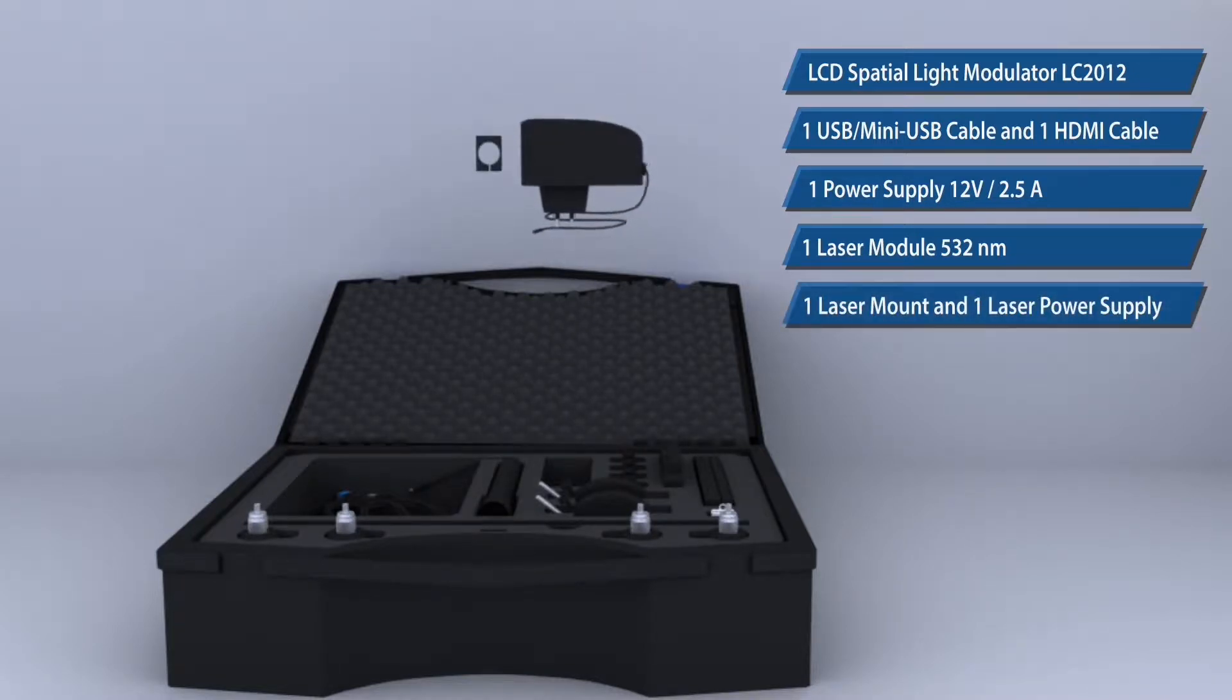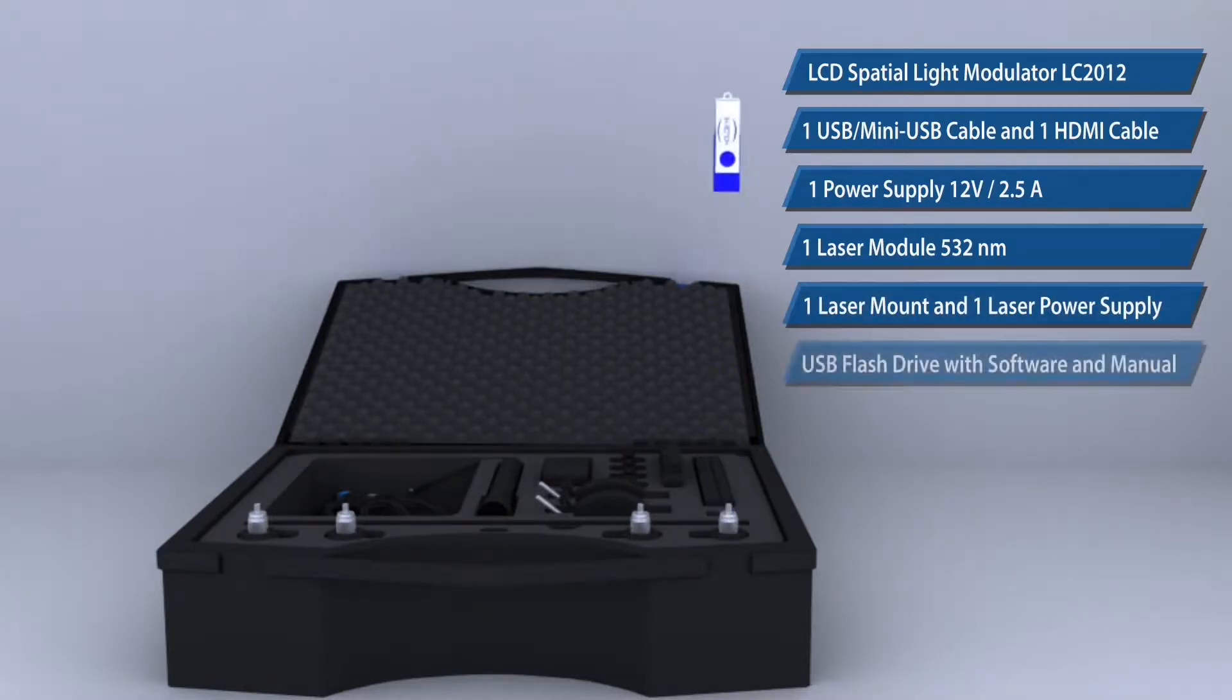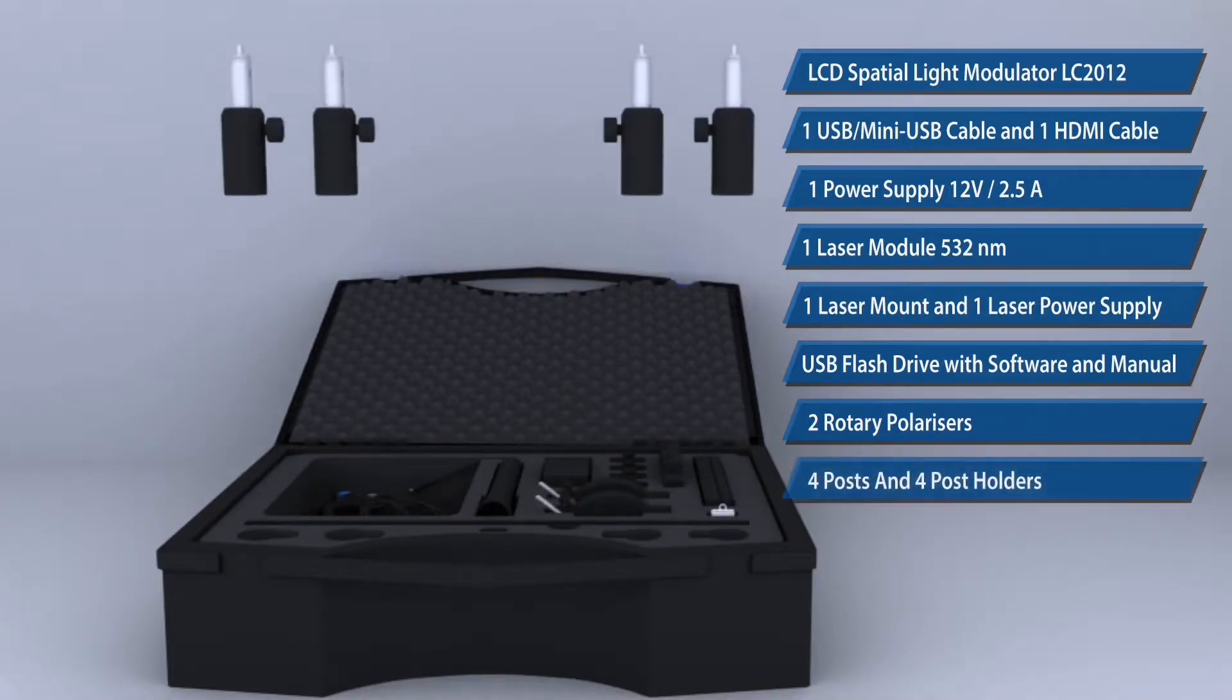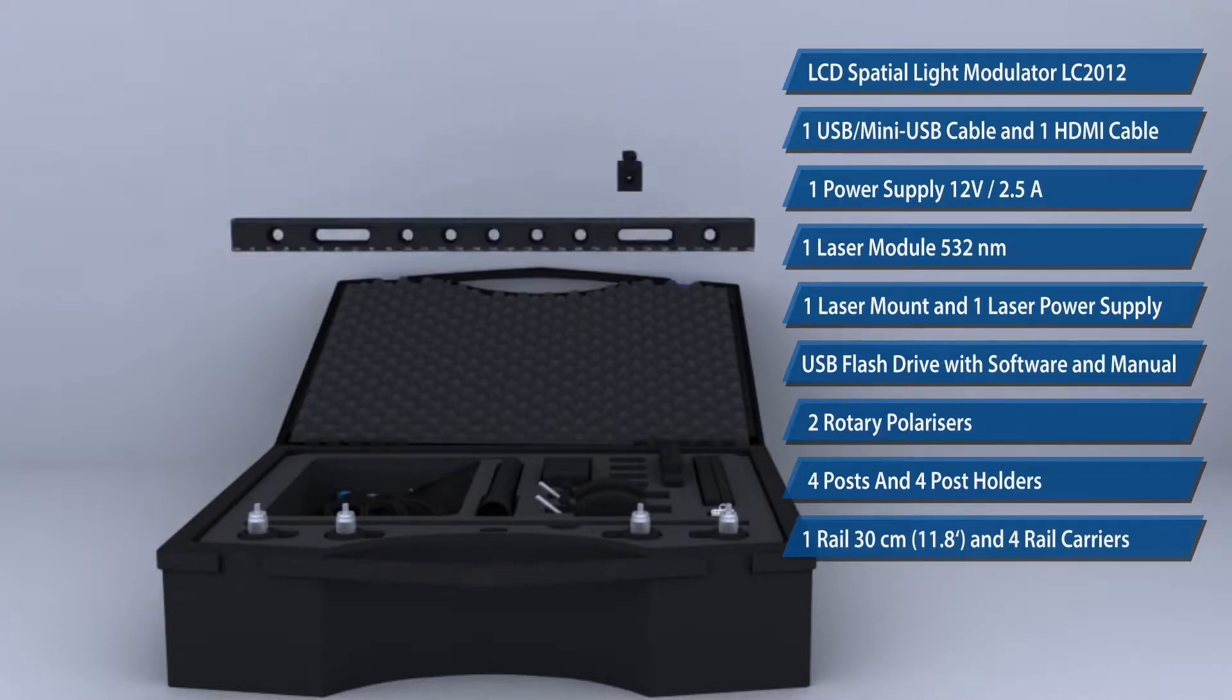A laser mount and a 5 volt power supply for the laser, a USB flash drive with software and manual, 2 rotary polarizers, 4 posts and 4 post holders, 1 30 centimeter rail and 4 rail carriers.